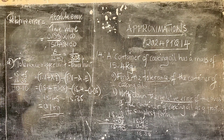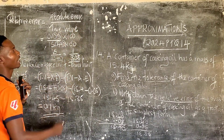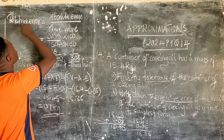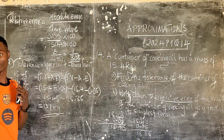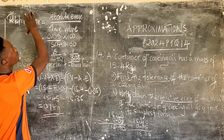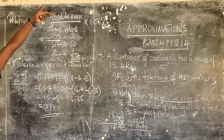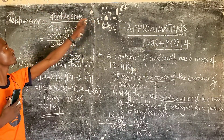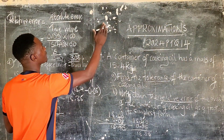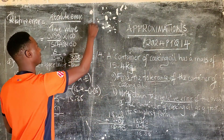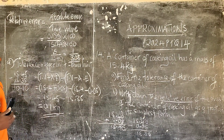The other question that you may be asked is something to do with percentage error. Percentage error is the relative error times 100%. So percentage error equals absolute error over true value, times 100%, because absolute error over true value is the relative error. Since we are not asked to find that one in this question, that's it.